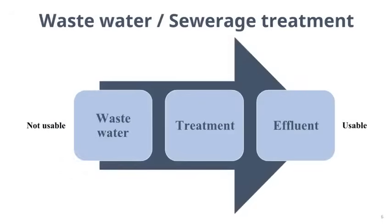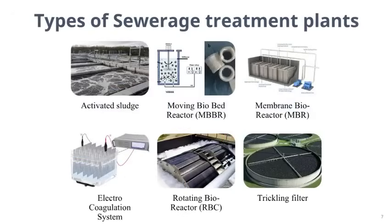Sewage treatment is a mechanism to remove contaminants from sewage to produce an effluent that is usable or suitable for discharge to the surrounding environment. A sewage treatment plant works by breaking down solid waste to produce a cleaner, more environmentally friendly effluent. There are many types of wastewater treatment plants available with different technologies.